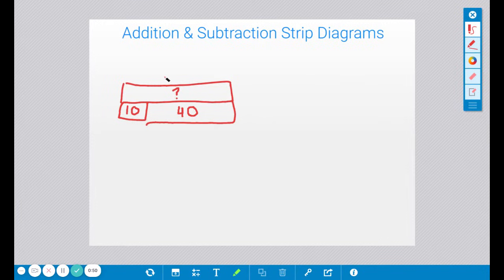This strip diagram is what you would consider an addition strip diagram, and the reason why is because in addition, you are looking for the whole. You're looking for the total. This right here is your whole, your total. These are your parts. So in addition, you're putting together the parts to find the total, to find the whole.